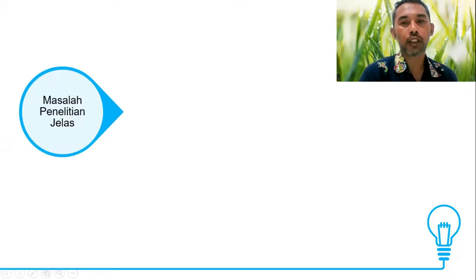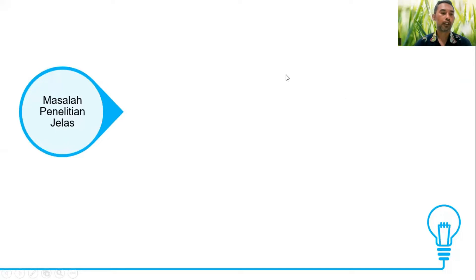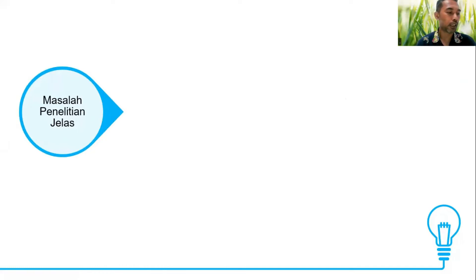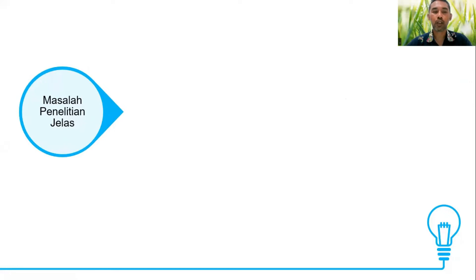Dalam menulis artikel, kita perlu memperhatikan masalah penelitian. Apakah masalah penelitian itu adalah masalah yang jelas untuk kemudian kita garap, apakah masalah itu berbasis teori, atau apakah masalah itu berbasis situasi lapangan atau situasi sosial. Kita perlu menentukan apakah penelitian kita berbasis masalah secara teoritis atau berbasis masalah secara sosial di lapangan, dan ini perlu dikemukakan ketika kita menulis artikel.